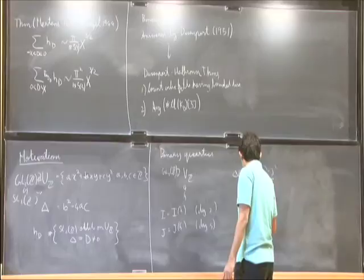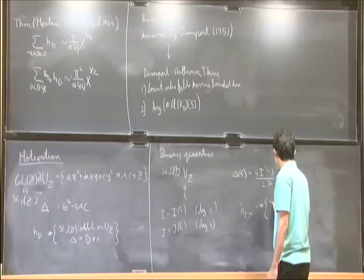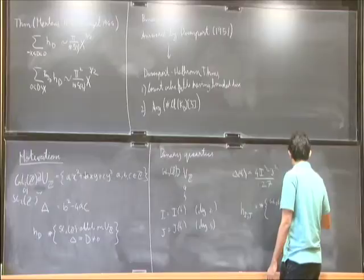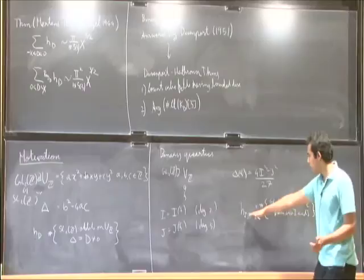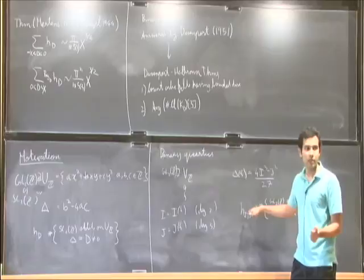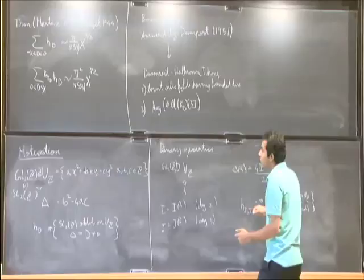The analogous quantity to h_d is what we will call h_{I,J} which is the size of the set of GL(2,Z) orbits on V_Z having invariants I and J. In general work of Borel and Harish-Chandra implies in particular h_{I,J} is finite as long as the discriminant of I and J is non-zero.